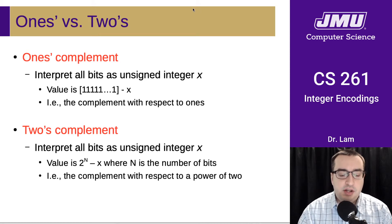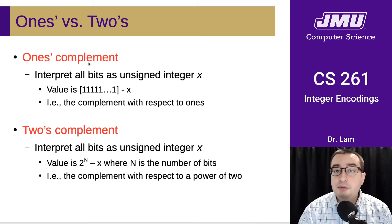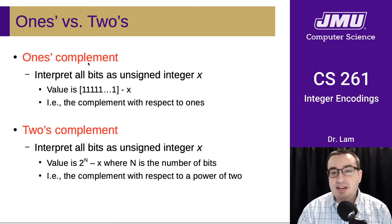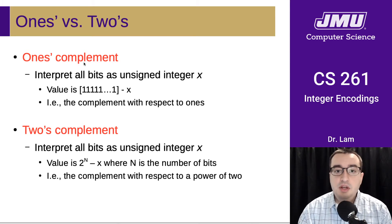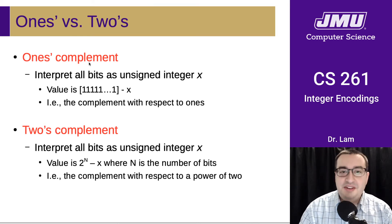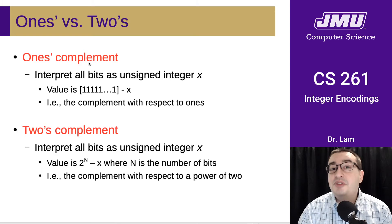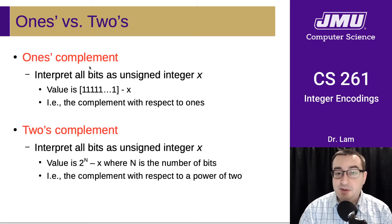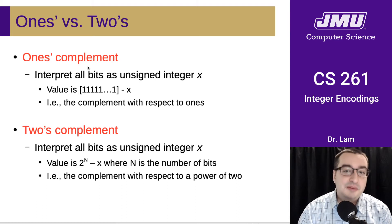Another thing I'd like to highlight is that a lot of students tend to get complement with an E mixed up with compliment with an I. In English, complement with an E is something that completes or goes with something else — the other side of the same coin. Compliment with an I is saying something nice about something. So we're not complimenting the one or the two — we're not telling the two that it's a particularly nice number — we are using it as an operation.